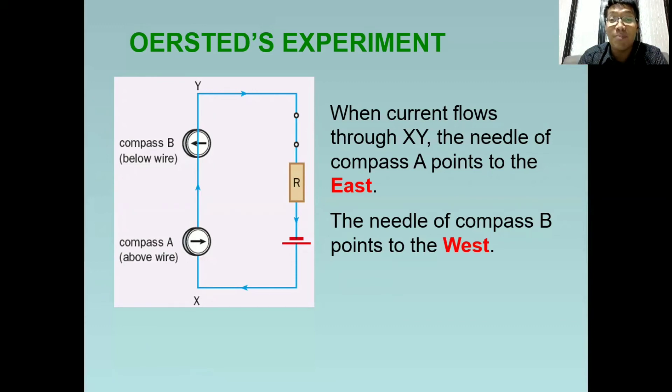But what is the point of this experiment? Orsted found out that electricity or current flowing through a wire can also produce magnetic field. That's why the needle pointing to the north originally is now changed.